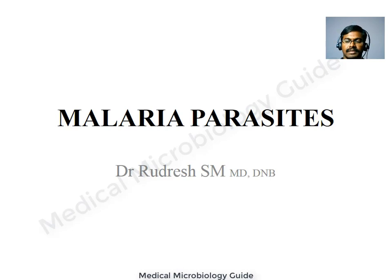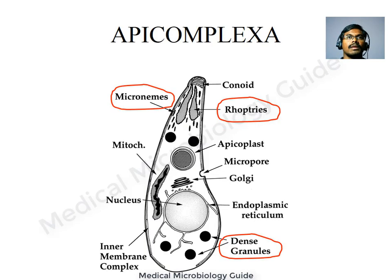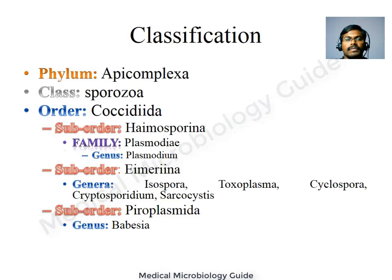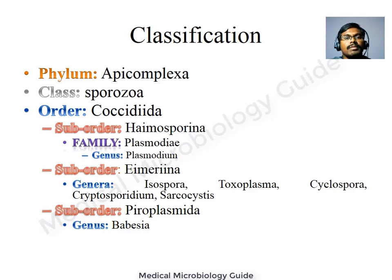In this video we will discuss malarial parasites. Malarial parasites belong to phylum Apicomplexa. The phylum is named so because of its complex apical structure, which is composed of conoid, rhoptries, and micronemes, which help the parasite in attachment and invasion of the host cells. The phylum Apicomplexa has class Sporozoea, order Coccidida.